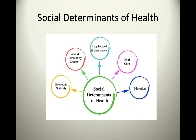Think about the community you live in — are people employed? Do you have great grocery stores nearby? Do you have access to things? Can you find a place that is accessible and affordable to rent? Social and community context matters too — whether people are happy and well around you impacts your health. Does your neighborhood environment feel safe? Can you walk your streets without fear?